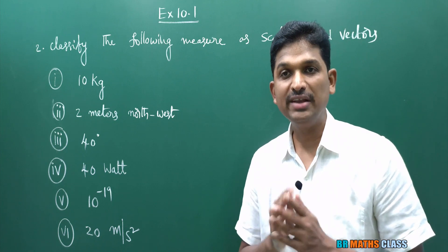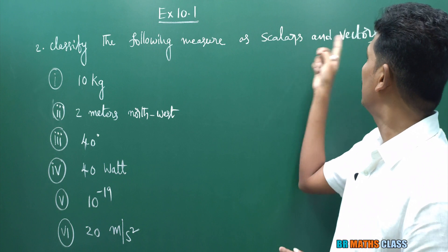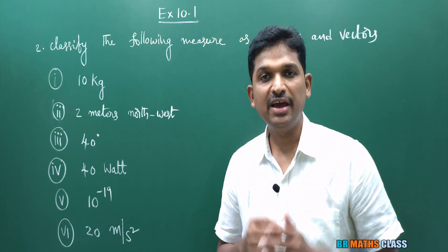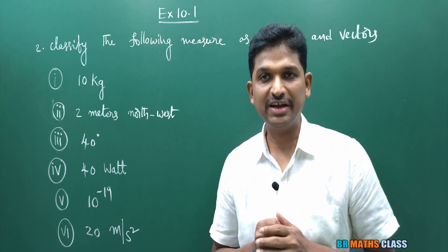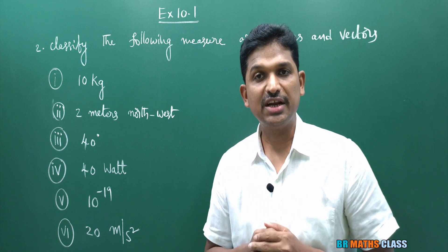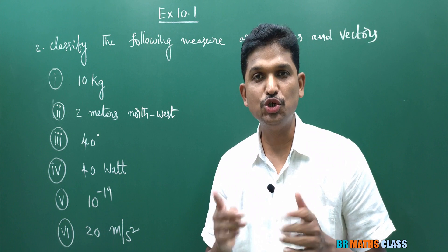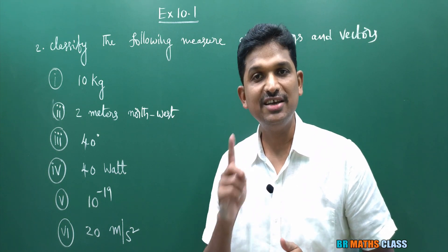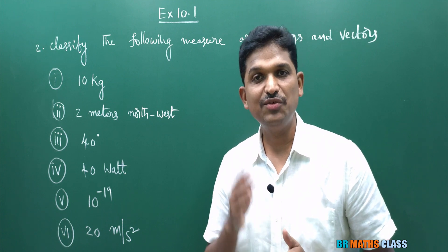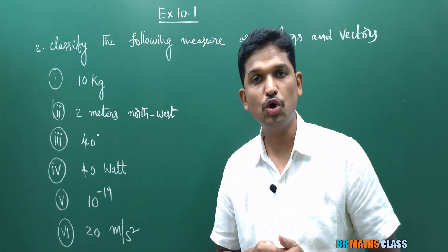Question number 2: Classify the following measures as scalars and vectors. We need to classify whether the given measures are scalars or vectors. You already know the definitions: a scalar is a physical quantity having only magnitude but no direction, and a vector is a physical quantity having both magnitude and direction.